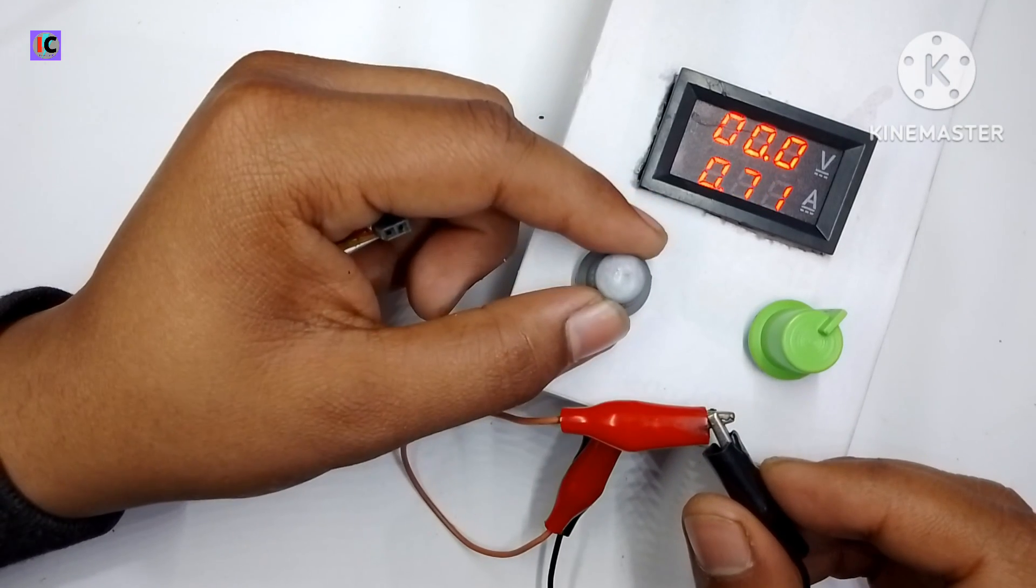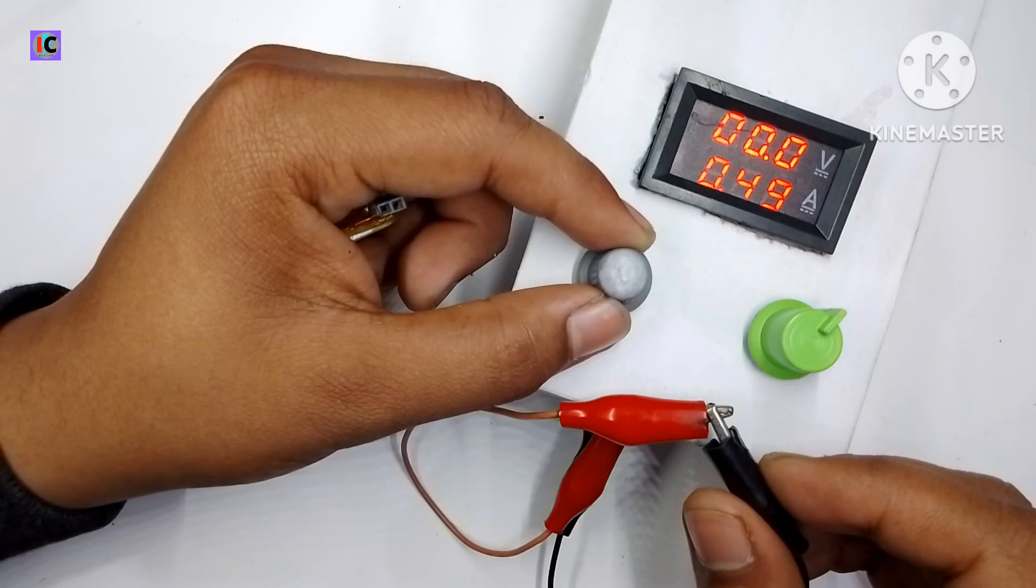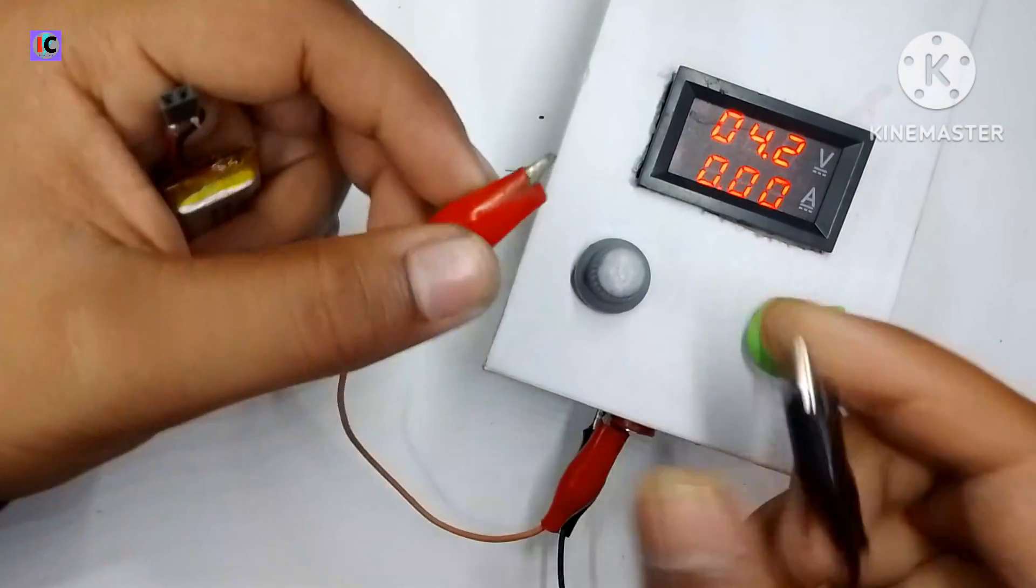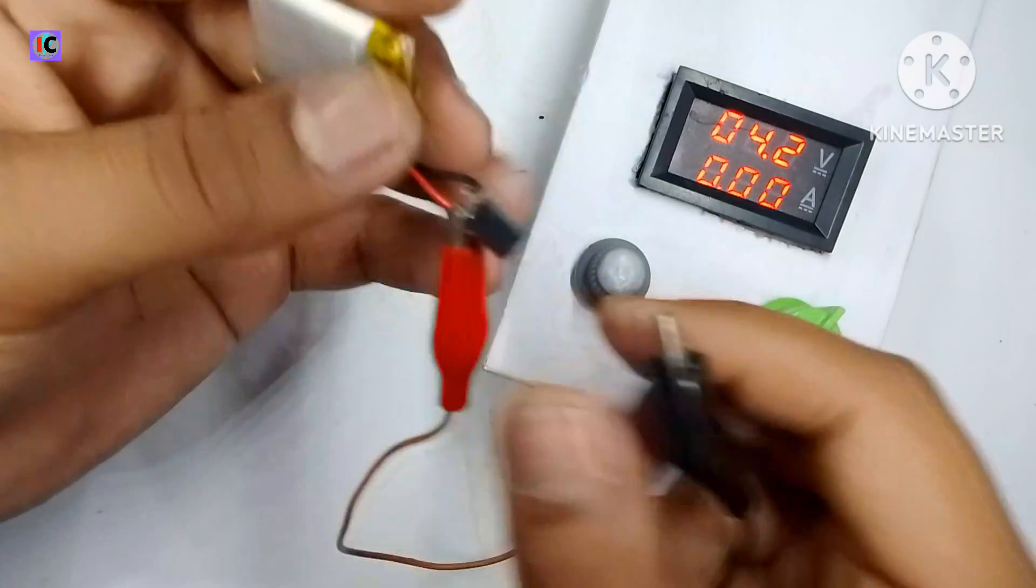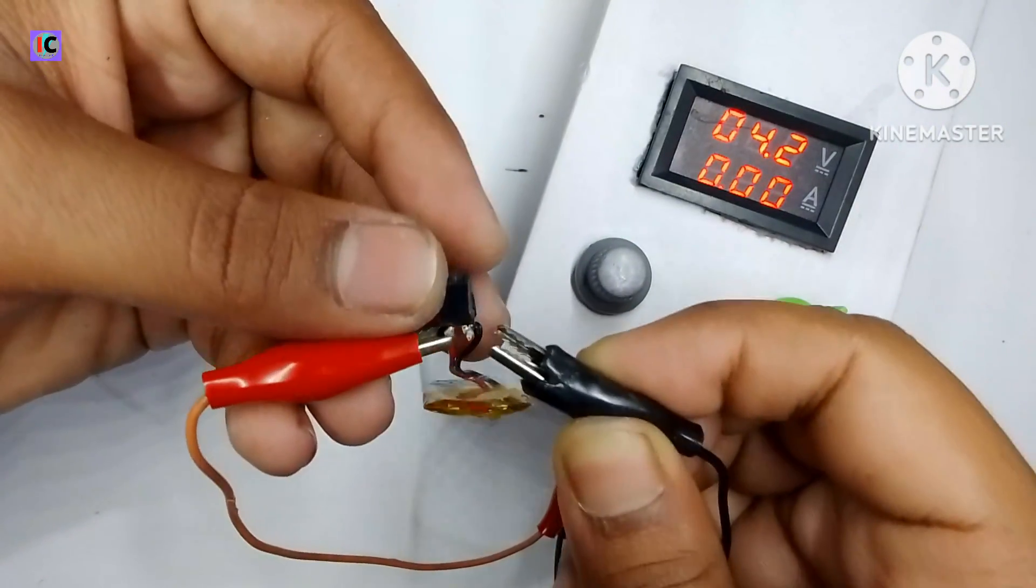So you can see for the charging current I am selecting the output current as 500 milliampere and the voltage is 4.2 volts for the 3.7 volt battery. So you can see I am connecting the battery with the output probes.